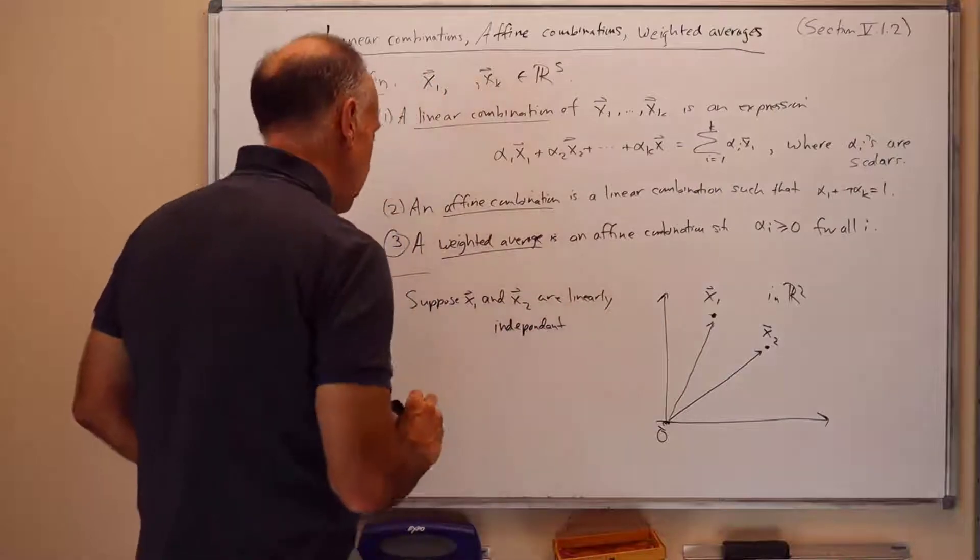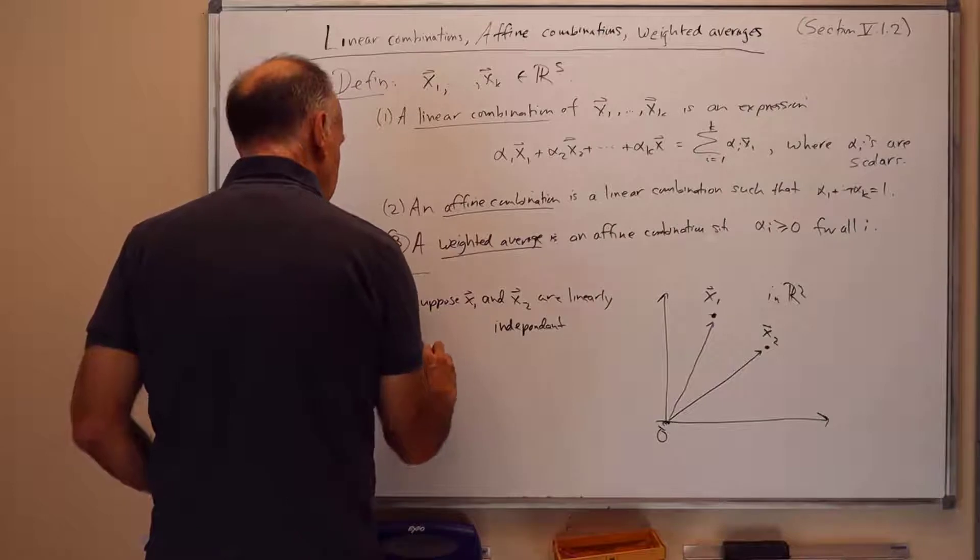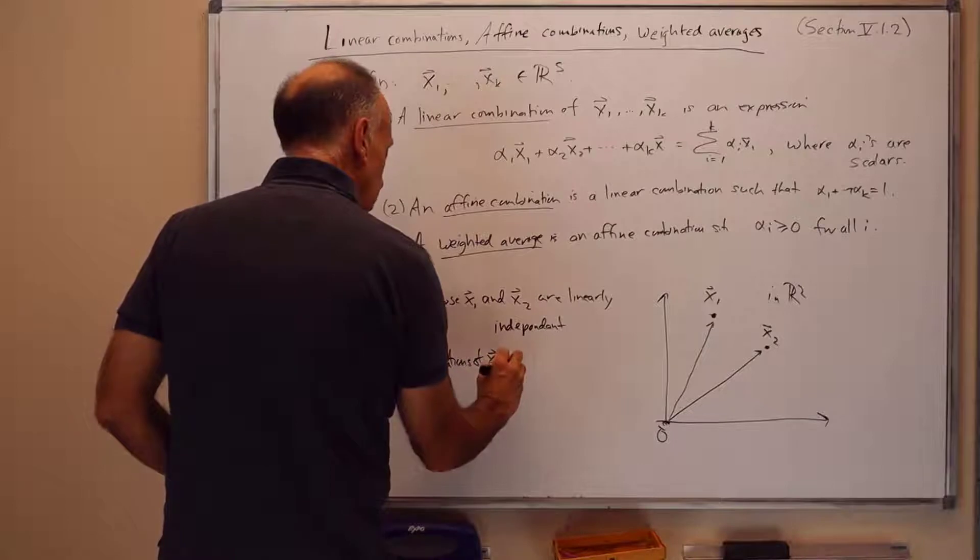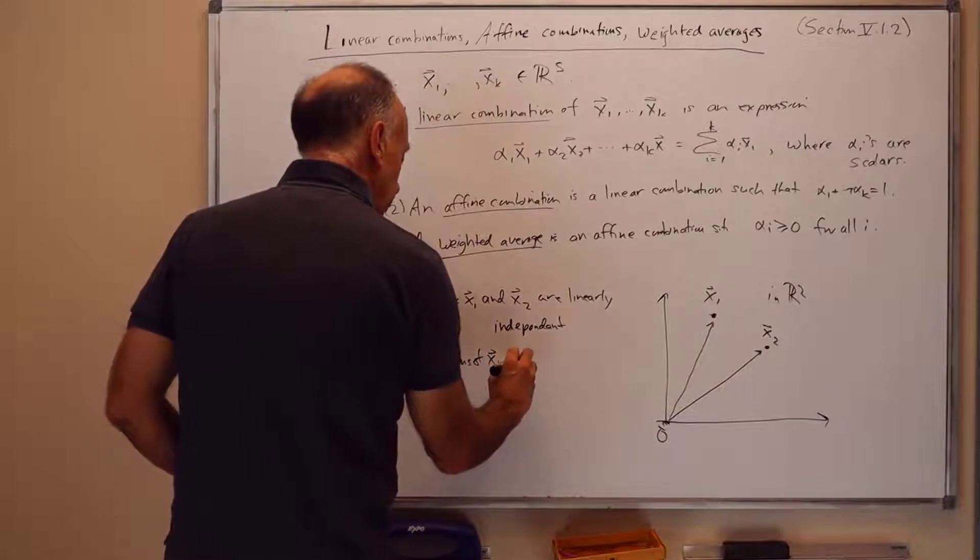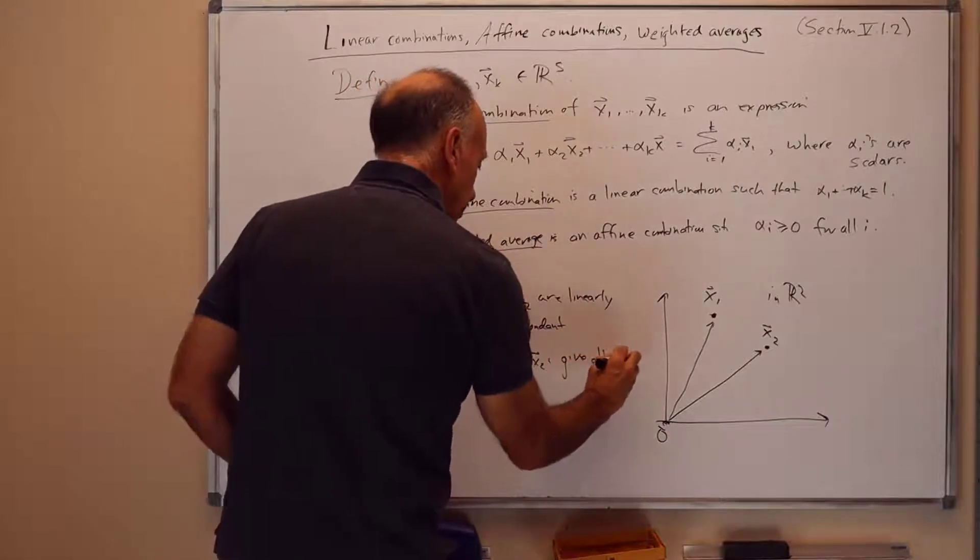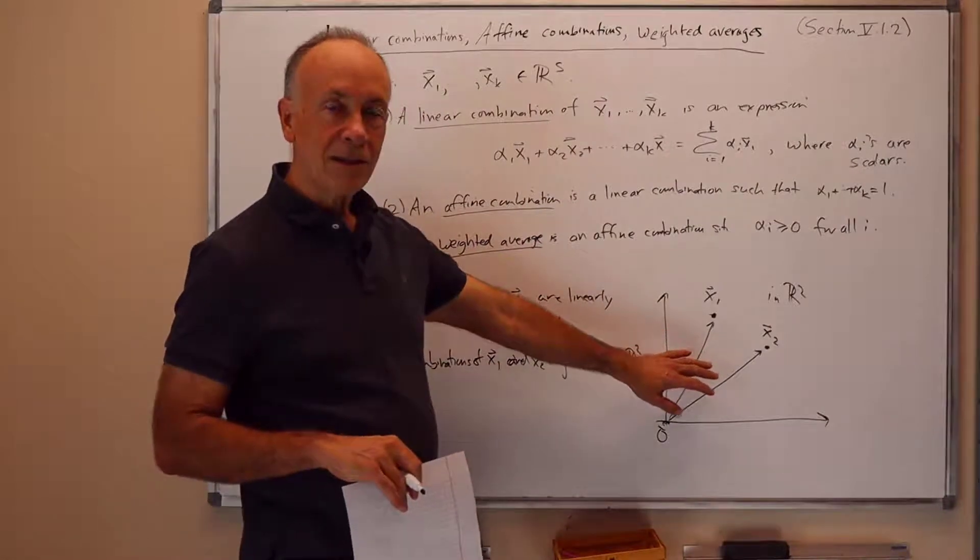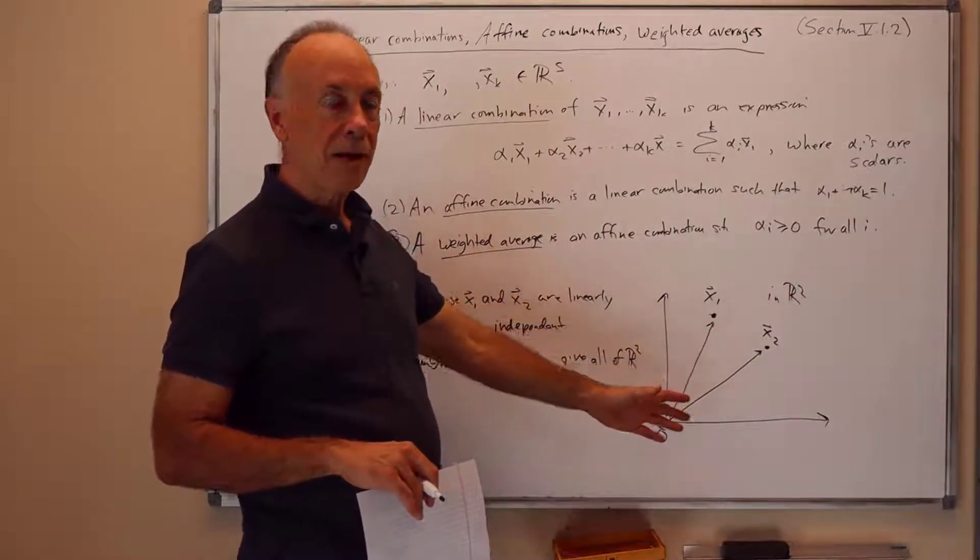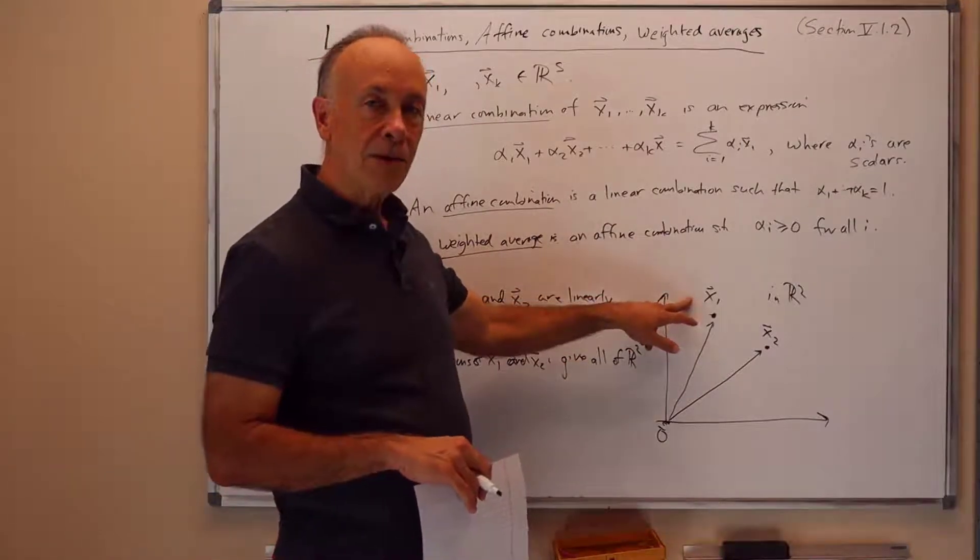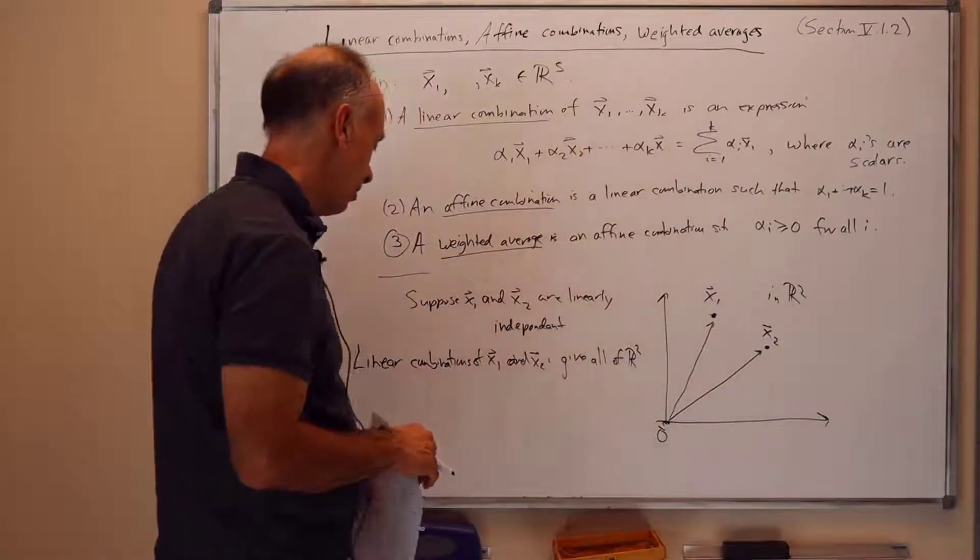Well then the linear combinations of x1 and x2, if you consider all possible linear combinations of x1 and x2, you get the whole plane, you get all of R2, because as linearly independent vectors in R2, they span the entire plane. And spanning the entire plane just means that any point in the plane you can write as a multiple alpha 1 times x1 plus a multiple alpha 2 times x2, and that's a linear combination.